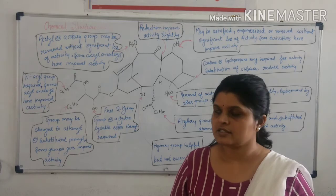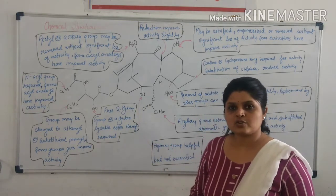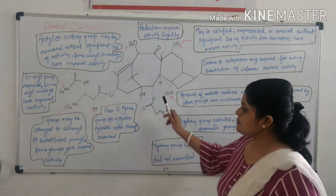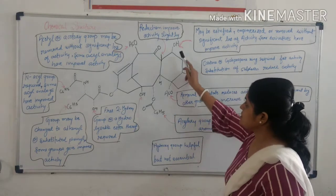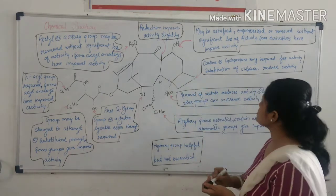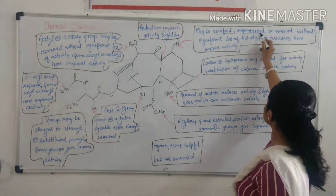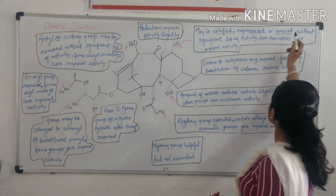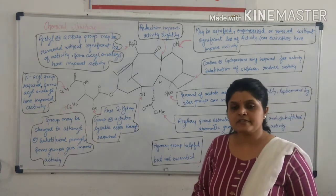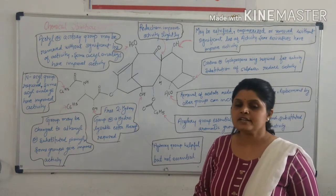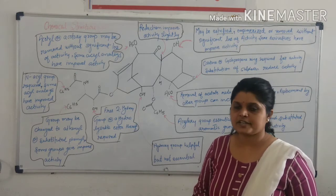So let us start with the chemical structure of taxol. This is the basic structure of taxol. This is the hydroxyl group. The hydroxyl group may be classified, esterified, or removed. Then its activity can be reduced or not significantly affected.